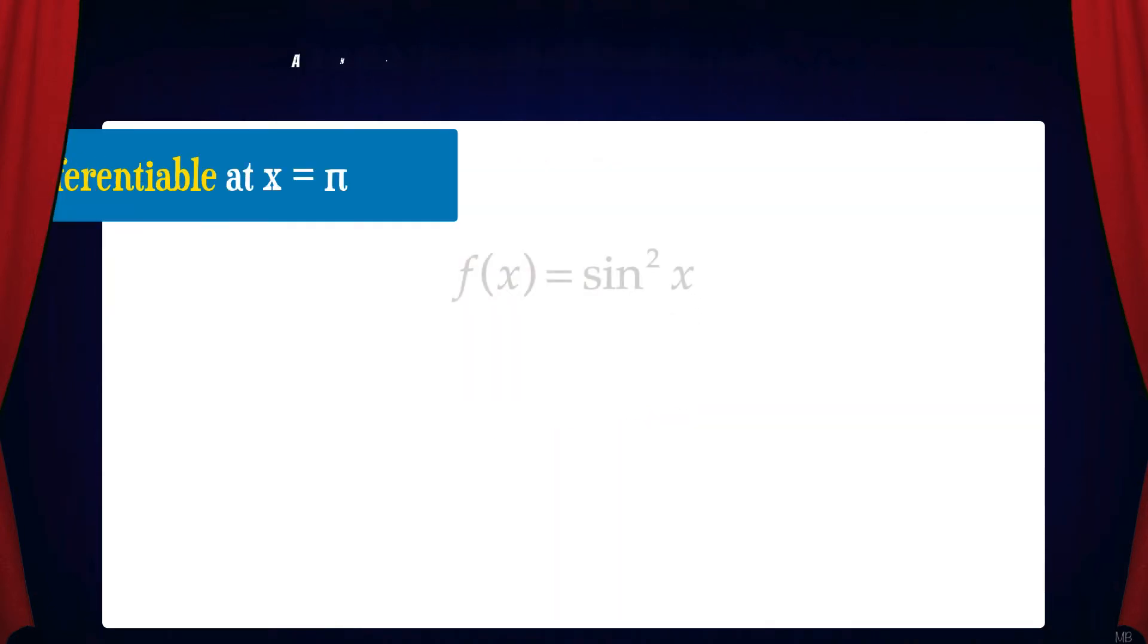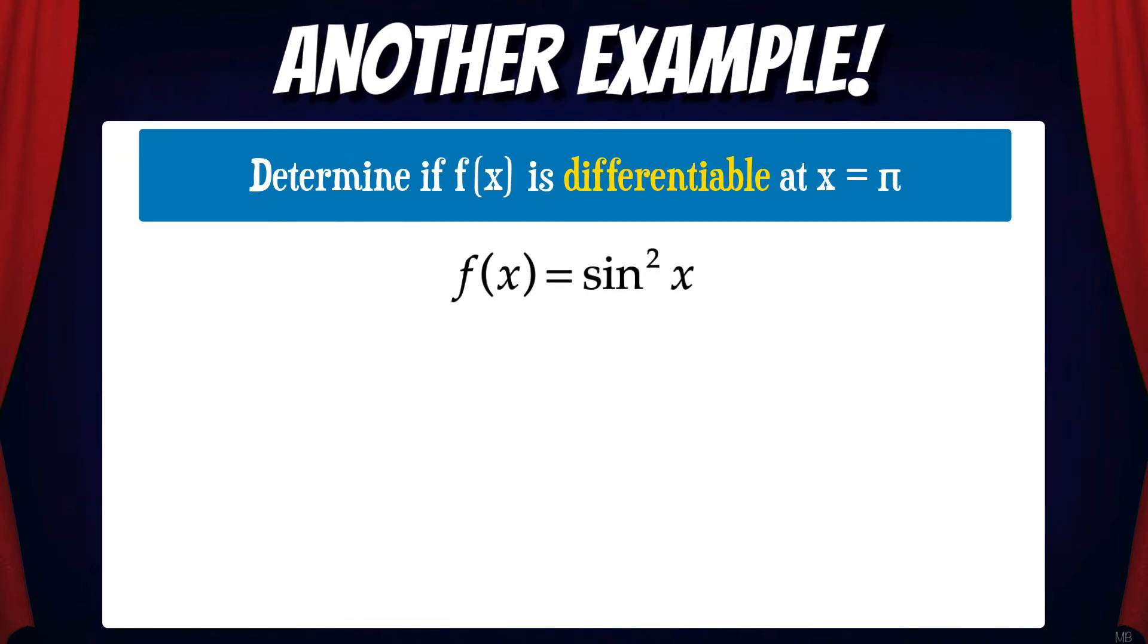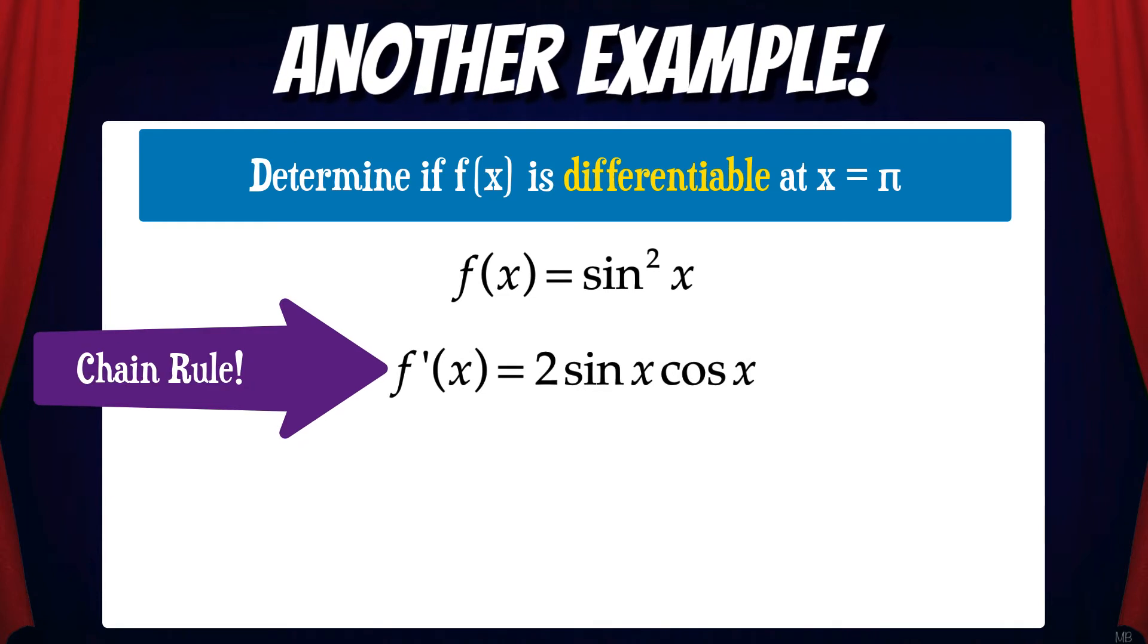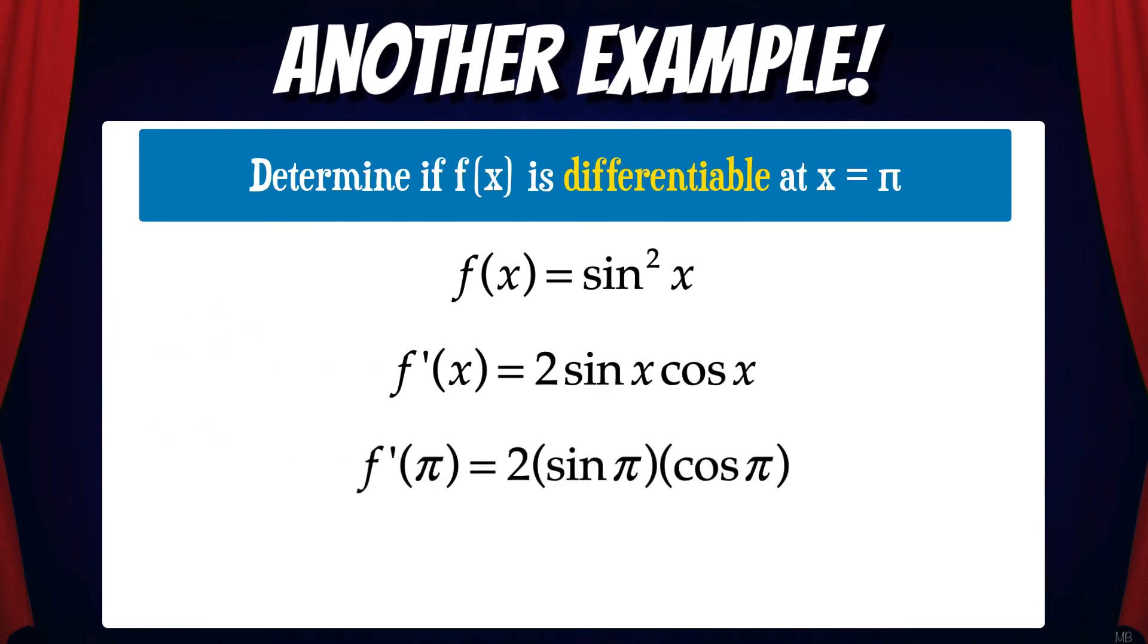Let's do another example. Determine if f of x is differentiable at x equals pi, where f of x equals sine squared x. So what we need to do is take the derivative and see if the derivative exists at pi. f prime of x equals two sine x cosine x by the chain rule. f prime of pi equals two sine pi cosine pi. And this simplifies to zero.